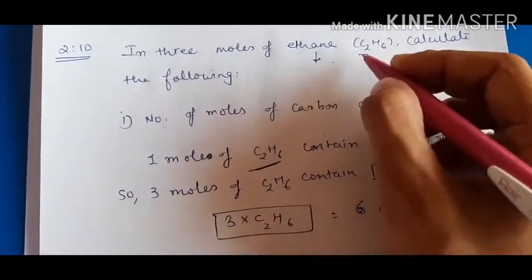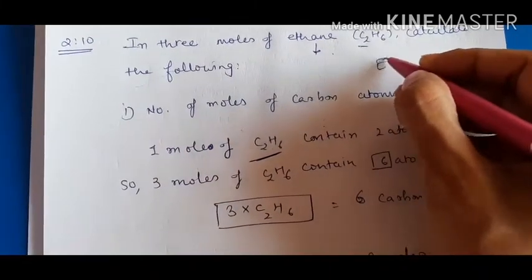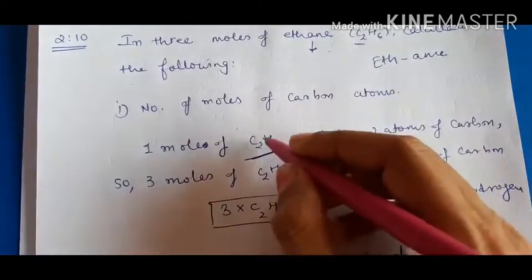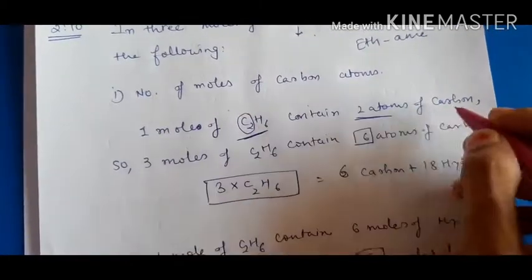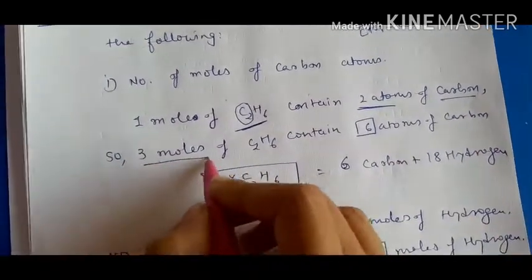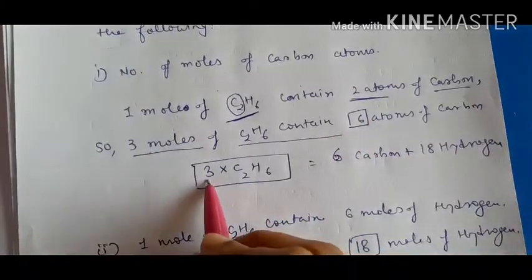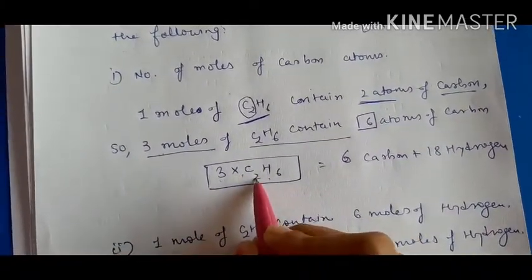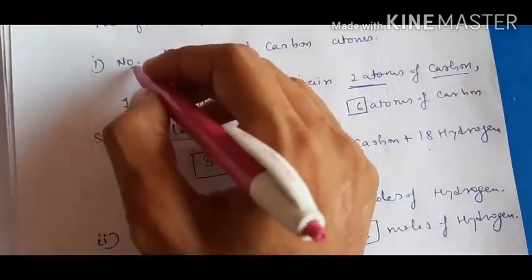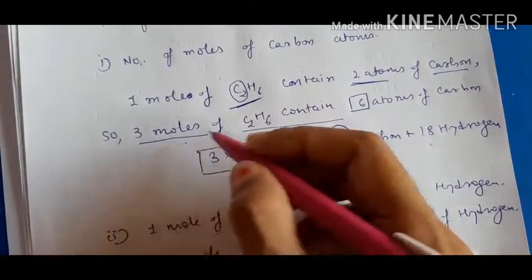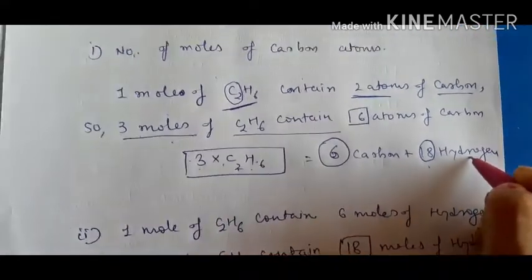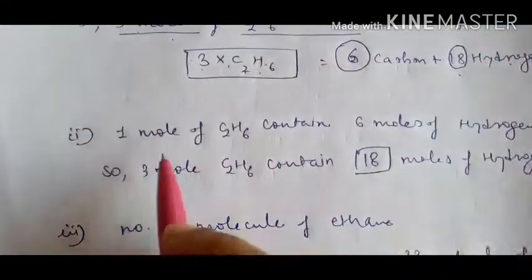Since 'eth' prefix means two carbons, ethane has 2 carbon atoms per molecule. So in 3 moles of ethane (3 × C₂H₆), there are 3 × 2 = 6 carbon atoms. Similarly, since each ethane molecule has 6 hydrogen atoms, 3 moles of ethane contain 3 × 6 = 18 hydrogen atoms.